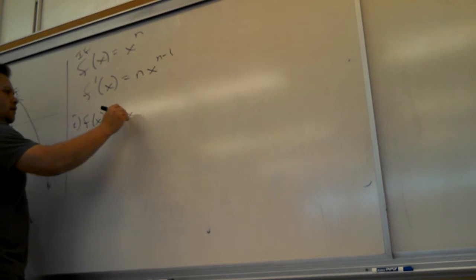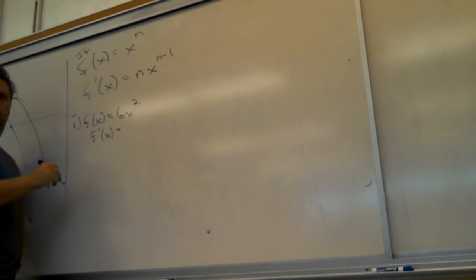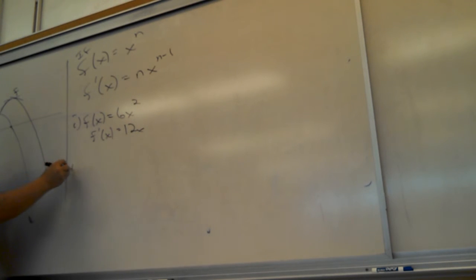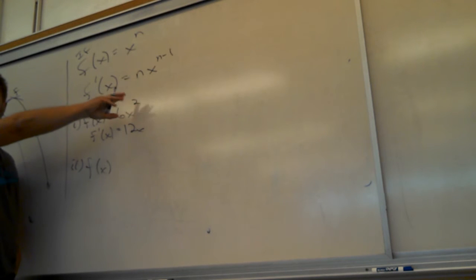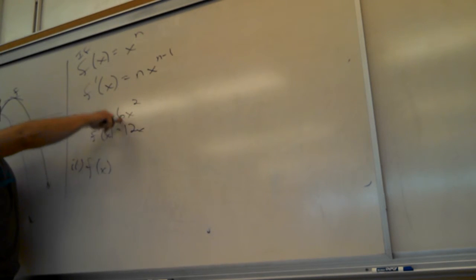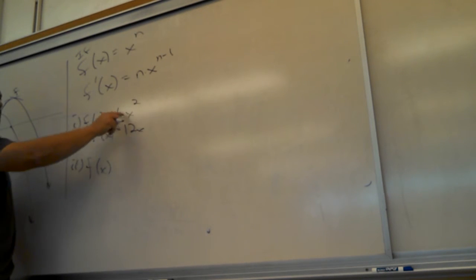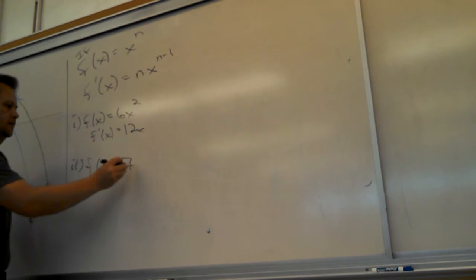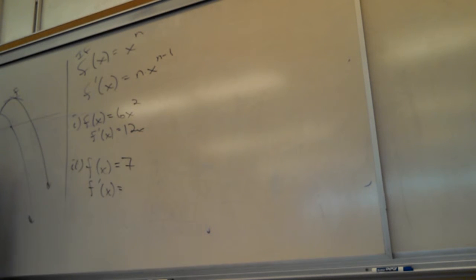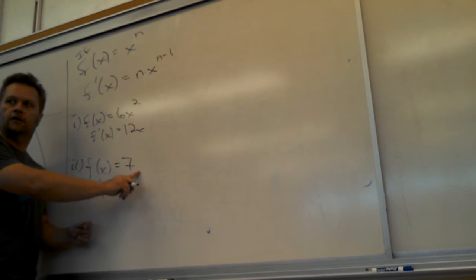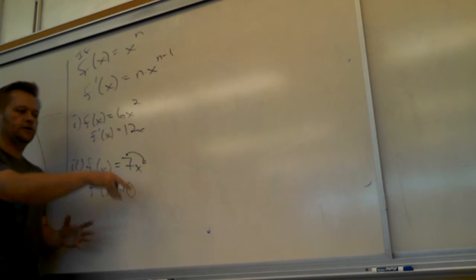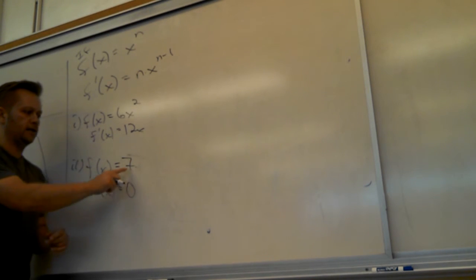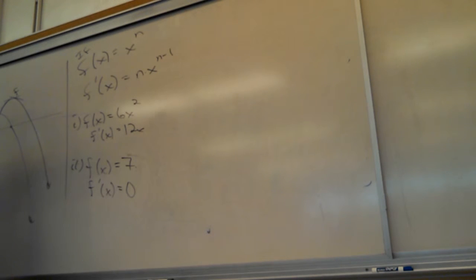Let's do a couple examples. What's the derivative of x squared? The 2 comes down - whatever coefficient is there already gets multiplied. So 2 times 6 is 12, and the power goes down by 1. What about the derivative of a constant? Zero. Because it's x to the zero, so the zero comes down and kills it. The better way to look at it: a constant looks like a flat line - what's its slope? Zero. The derivative represents slope.